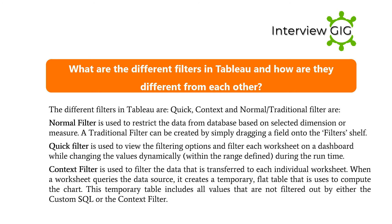What are the different filters in Tableau and how are they different from each other? The different filters in Tableau are Quick, Context, and Normal. A Normal filter is used to restrict the data from the database based on a selected dimension or measure, and can be created by simply dragging a field onto the filters shelf. A Quick filter is used to view the filtering options and filter each worksheet on a dashboard while changing the values dynamically during runtime. A Context filter is used to filter the data that is transferred to each individual worksheet. When a worksheet queries the data source, it creates a temporary flat table used to compute the chart, which includes all values not filtered out by either the custom SQL or the context filter.